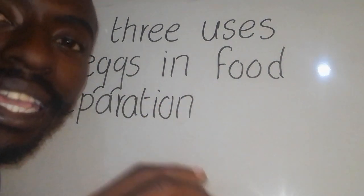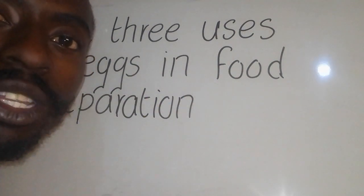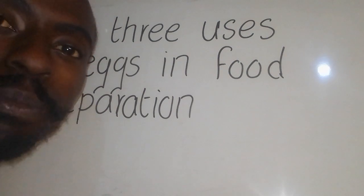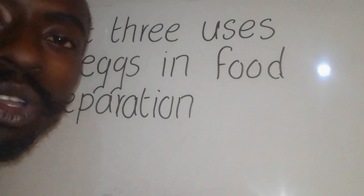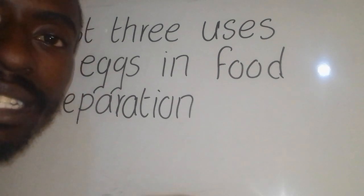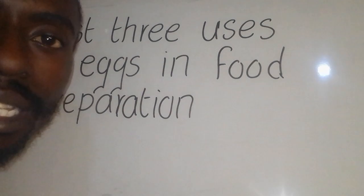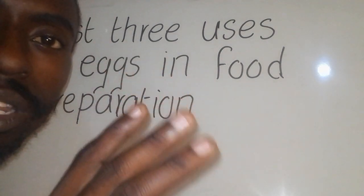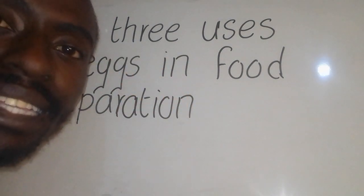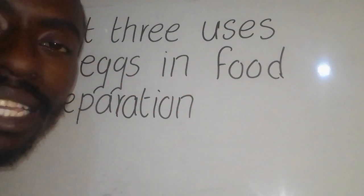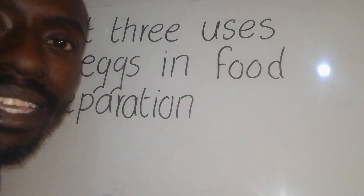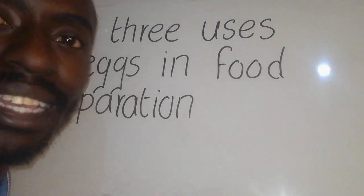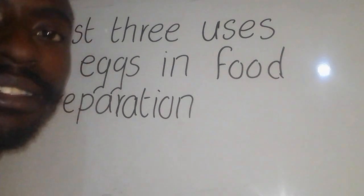Number two, eggs help in coating. How? They help to bind the components or the mixtures of the substances together. Number three, eggs help in thickening — that is to say, it thickens the sauce and the custard.